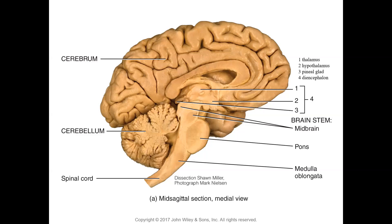The word 'diencephalon' — 'di' means two, 'cephalon' means brain. It is located in the brain's central area, not inferior like the brain stem nor posterior like the cerebellum, but just inferior to the cerebrum. It has three main regions: the thalamus, the hypothalamus, and the epithalamus. The thalamus is composed of paired X-shaped bodies, centrally located in the diencephalon, making up about 80 percent of the diencephalon.